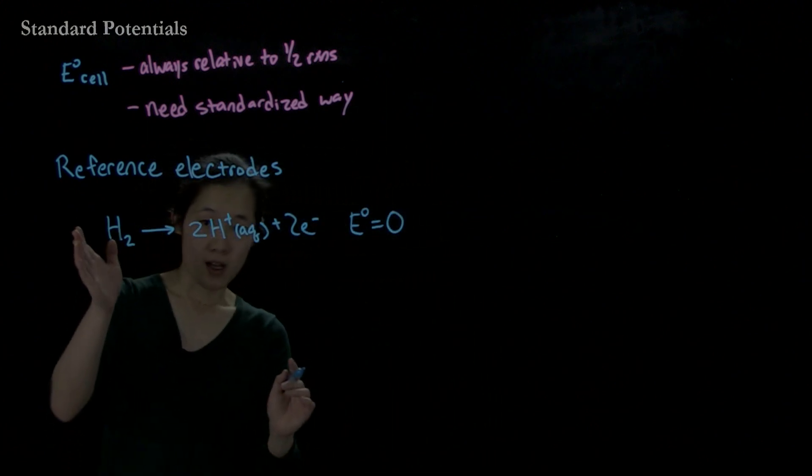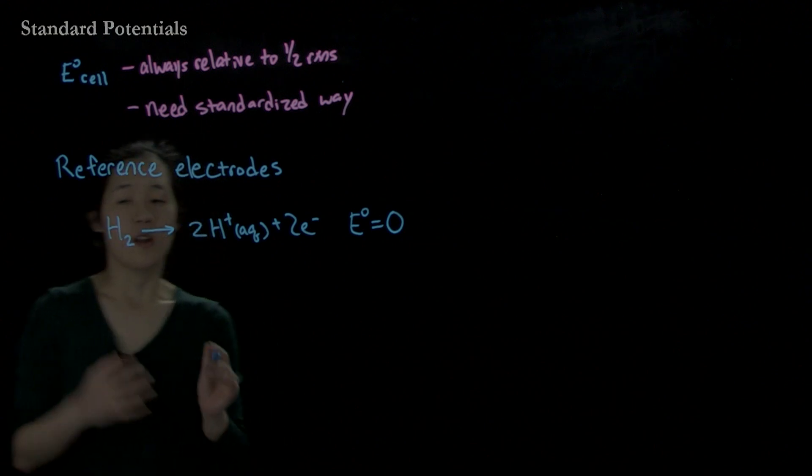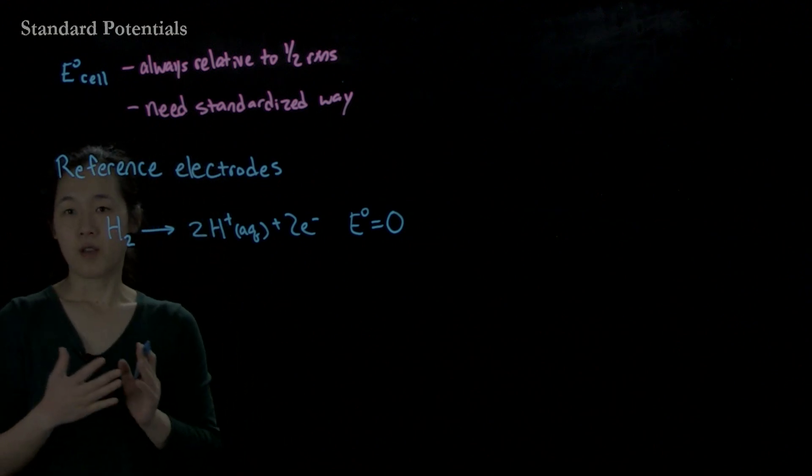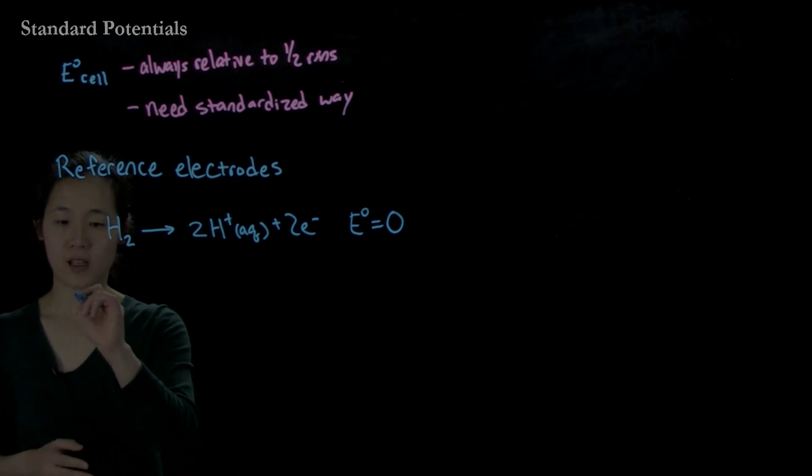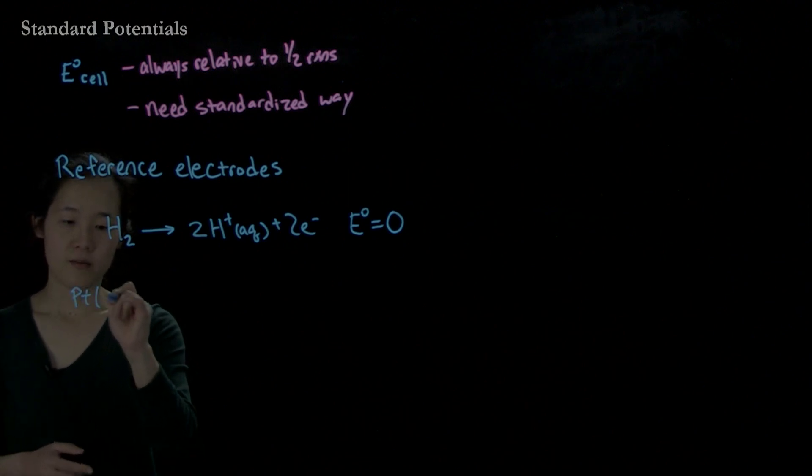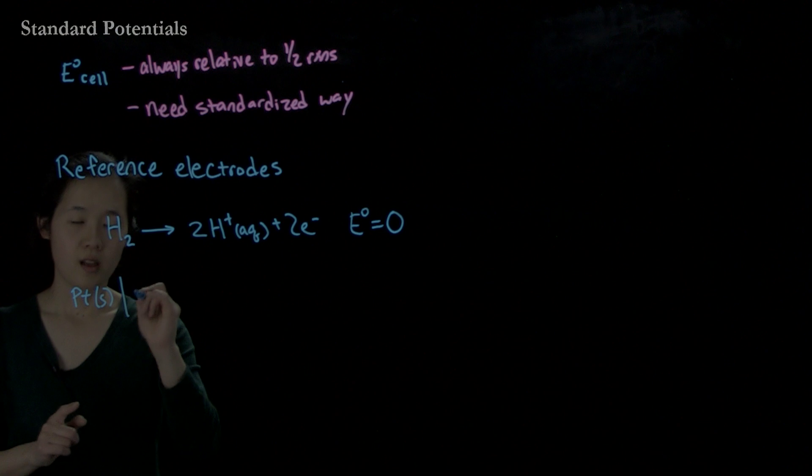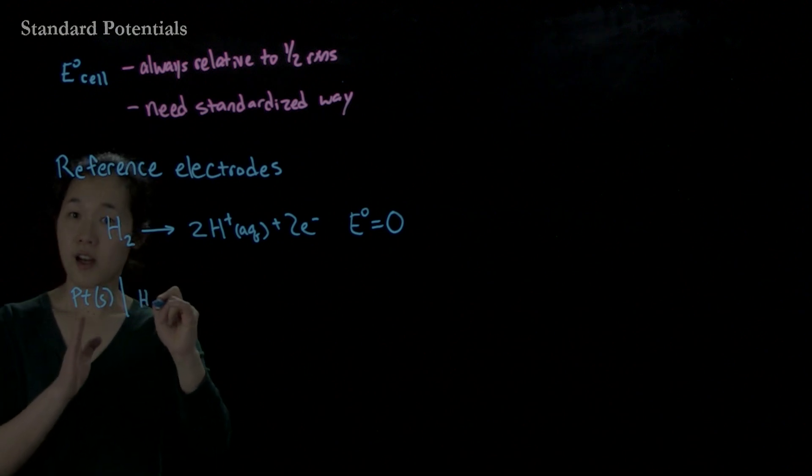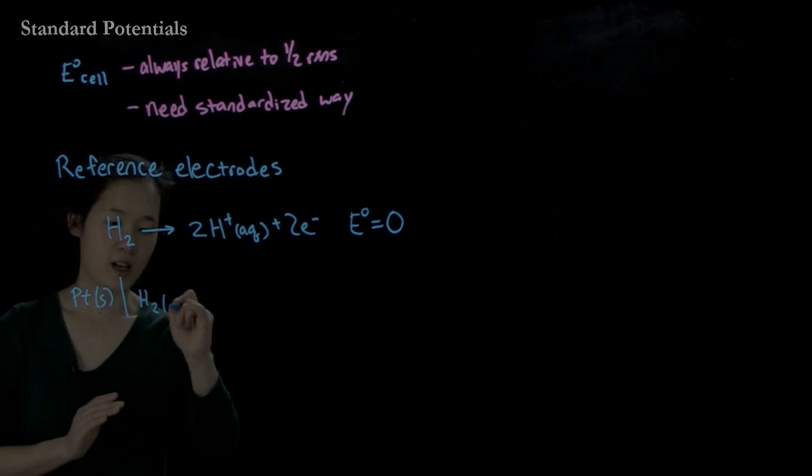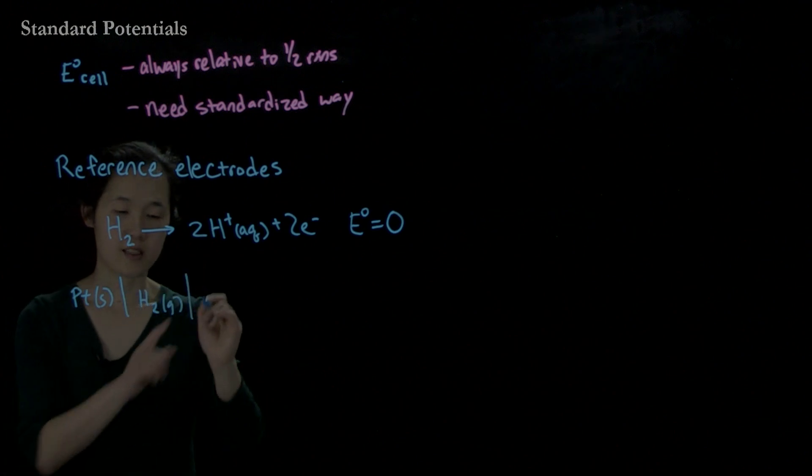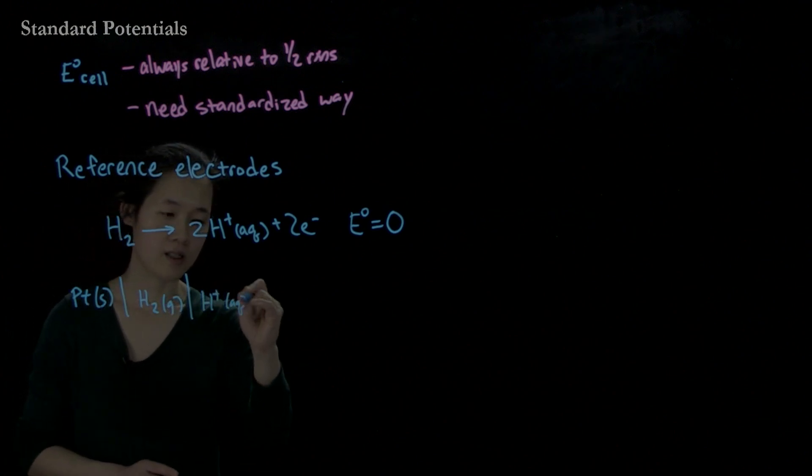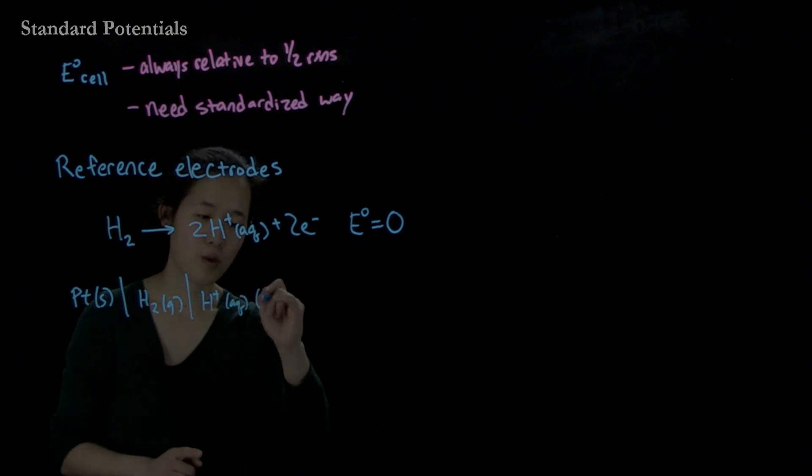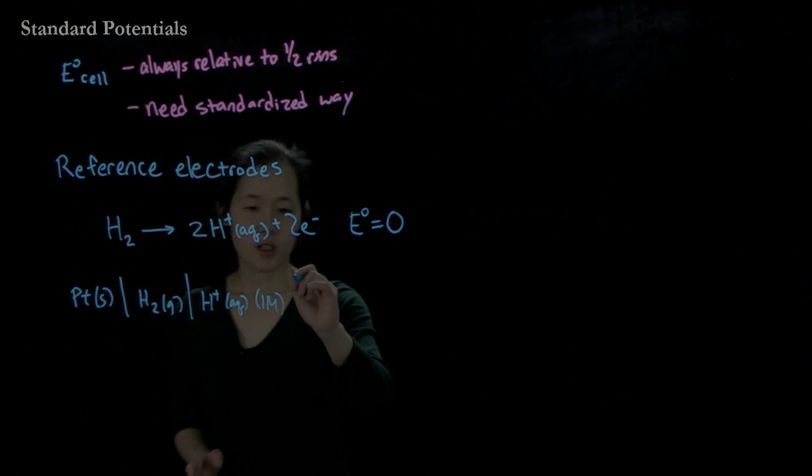This is a half reaction. Then we make our electrochemical cell. So here's my cell. Let's say we take platinum electrode - this is an inert electrode. This is our anodic side. So hydrogen is getting oxidized. Hydrogen gas getting oxidized, phase boundary, to protons aqueous. Under standard conditions, this will be one molar. And then we have our salt bridge.